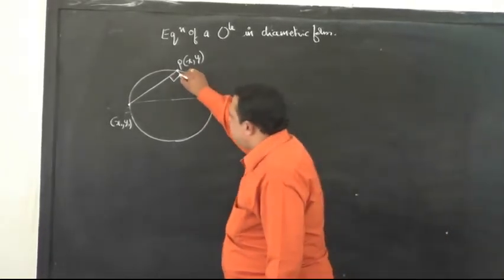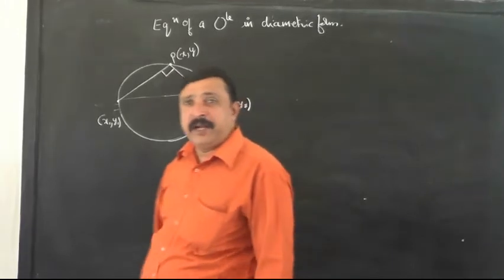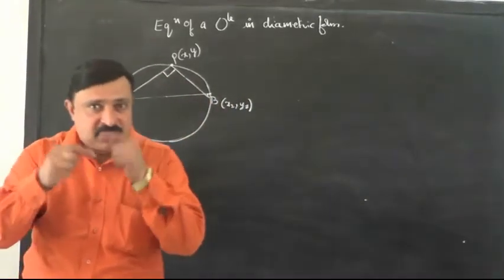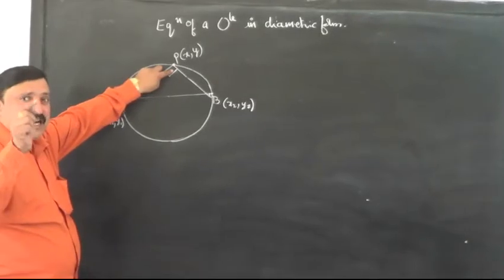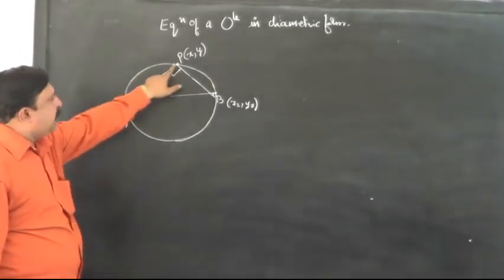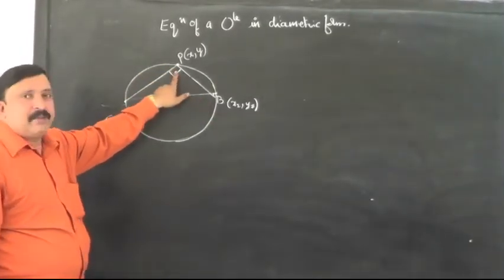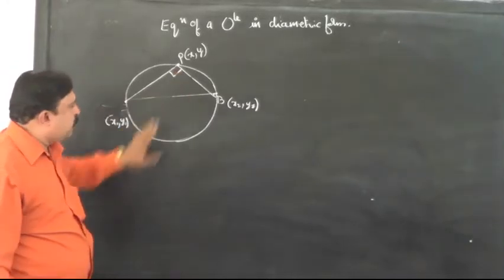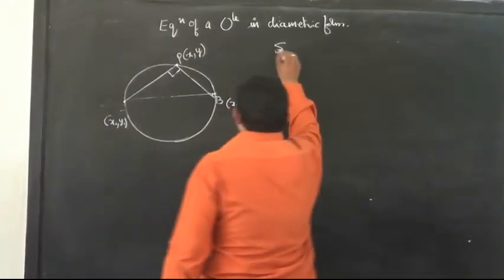Evidently, the angle at P is a right angle. You know why it is a right angle? Because the angle in a semicircle is a right angle, and APB is an angle in this semicircle of the circle, and hence it is going to be a right angle.